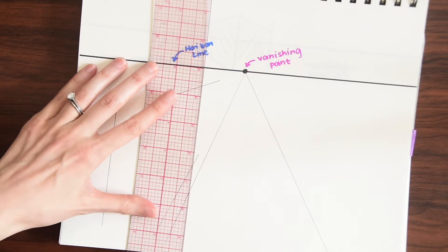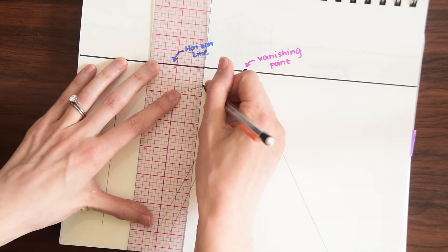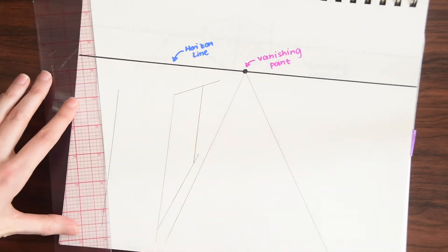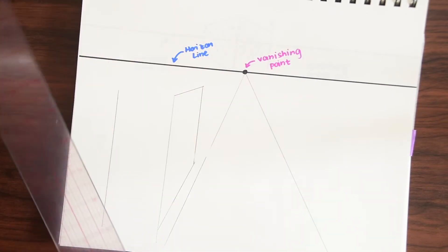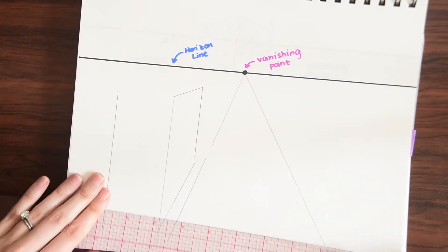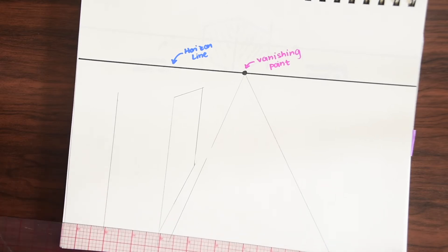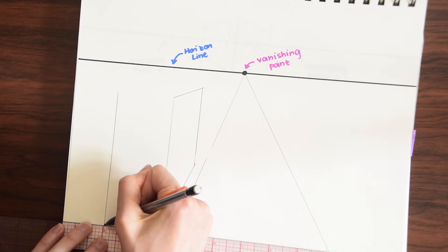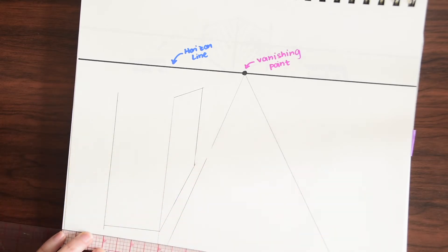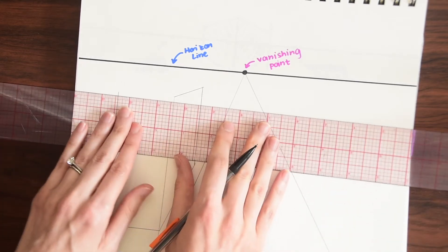And then to end this building off we're just going to draw a straight line down and then we can erase any extras we have here. And down here we're just going to draw a straight across straight horizontal line that matches our horizon line because our point of view is facing the side of the building.